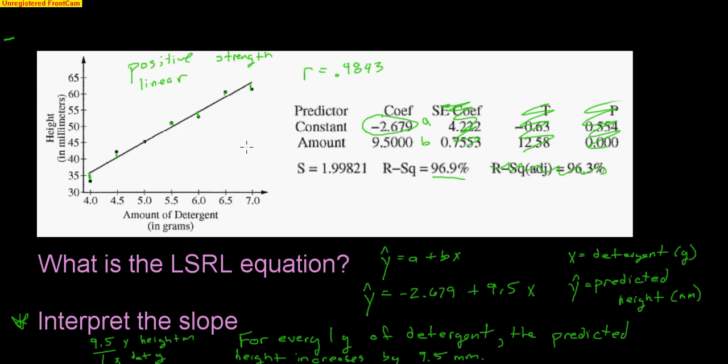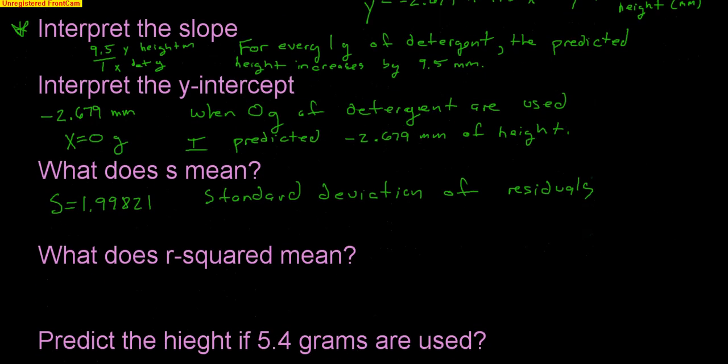So once again, notice that for the most part, my line is pretty good at making predictions, by the way. That's because my R-squared is so high, which we'll get to in a second. But S is the standard deviation of residuals. It tells you when you use this line to make predictions, how far are you typically off? So what I'm trying to say here by this S value is that when I use this equation to make a prediction for the height of a soap sud, I'm typically off by 1.99 millimeters. That's pretty good. Look at the scatter plot. Almost every dot is very, very close to the line.